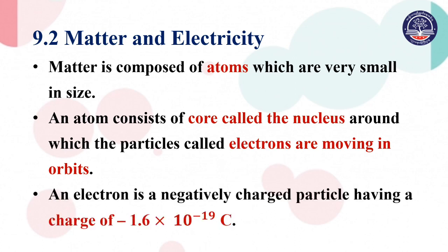An electron is negatively charged, having a charge of negative 1.6 × 10 to the power of negative 19 coulombs. This is the charge value of an electron.